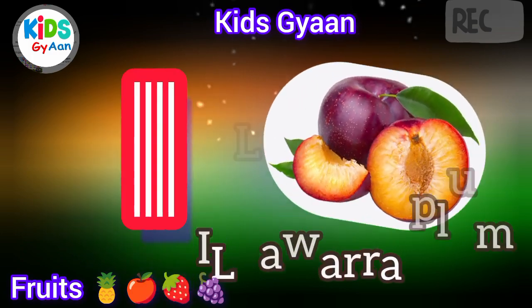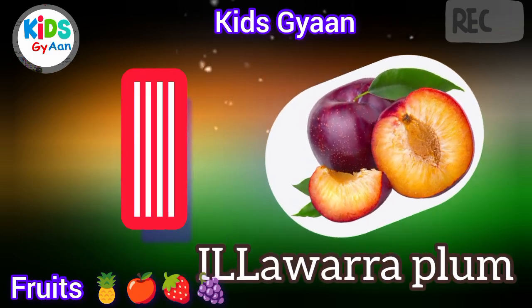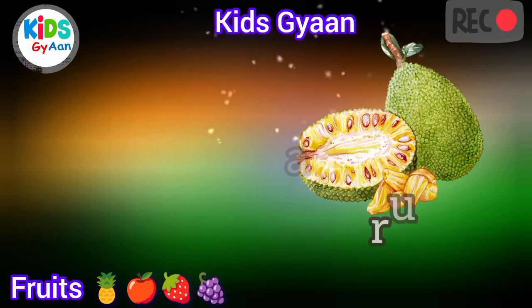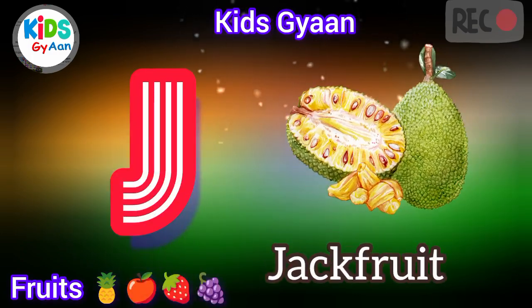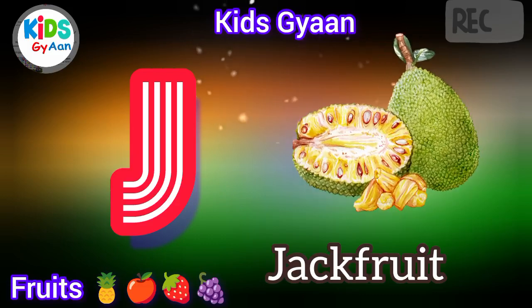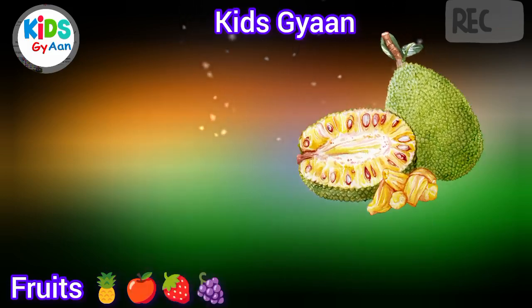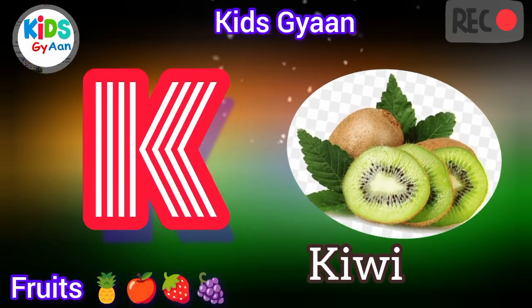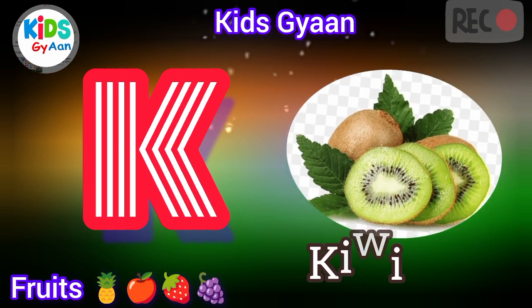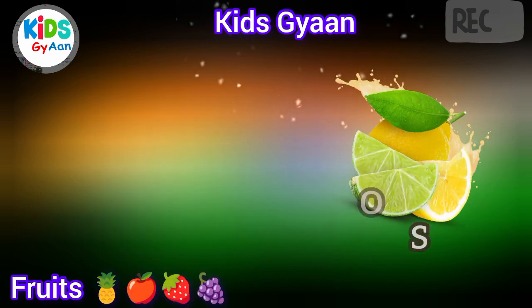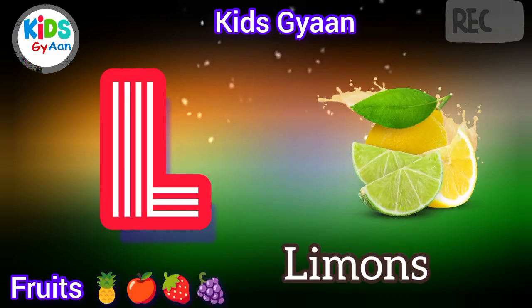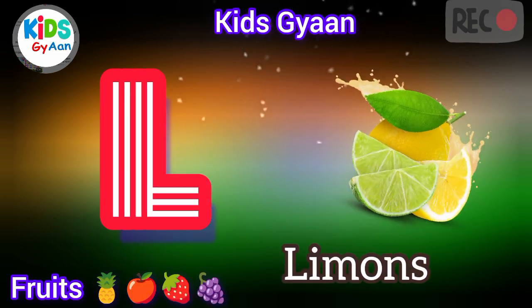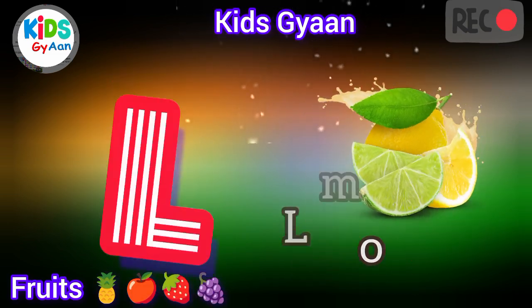I is for Itawara Plum. J is for Jackfruit. K is for Kiwi. L is for Lemons.